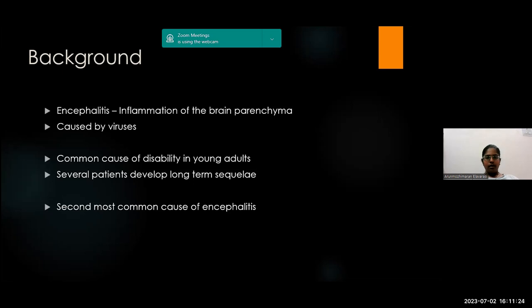Viral encephalitis is one of the common causes of disability in young adults and several patients develop long-term sequelae. It is the second most common cause of encephalitis — the first most common is autoimmune encephalitis. Previously viral encephalitis was thought to be the commonest, but with the advent of antibody testing, many cases previously lumped as viral were found to be autoimmune encephalitis.